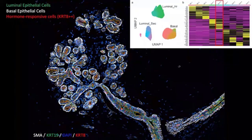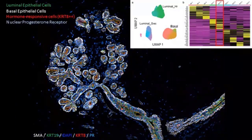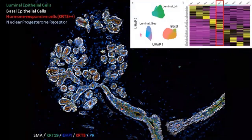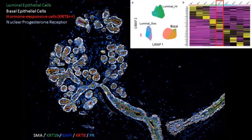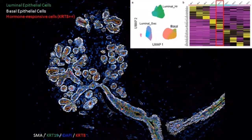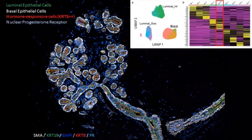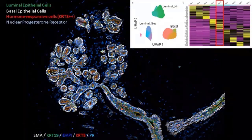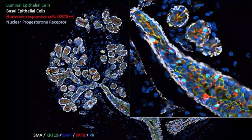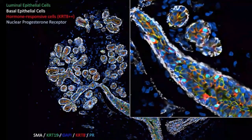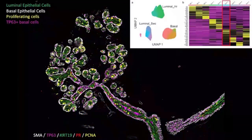Zooming into our single-cell RNA sequencing data focused on the epithelium, we discovered several distinct cell types and cell states. One basal cell state was marked by high levels of keratin 14 along with myoepithelial markers — overlaying keratin 14 shows this cell state most likely corresponds to the ductal basal epithelium compartment, but less so within the branched lobular epithelium. Another interesting cell state is a hormone-responsive luminal cell state marked by particularly high levels of keratin 8, with those highly keratin-8-positive cells also typically positive for nuclear progesterone receptor.